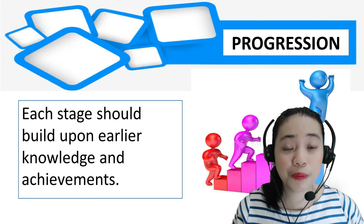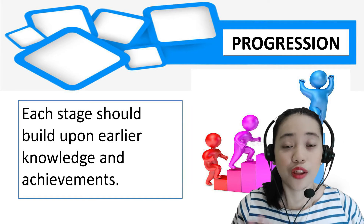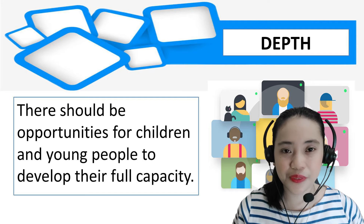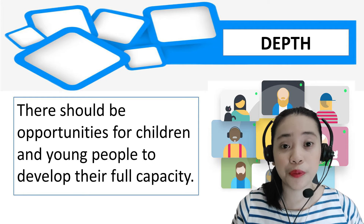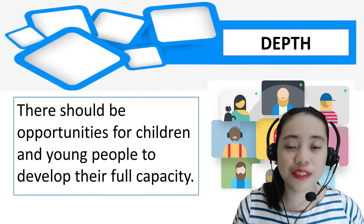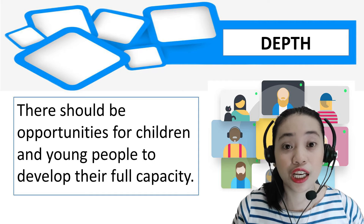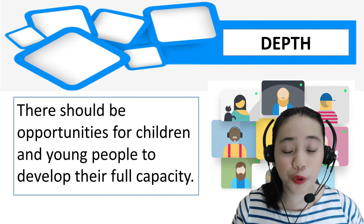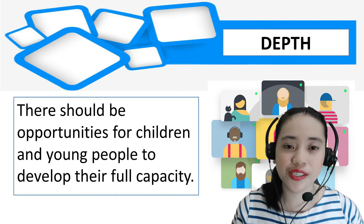Children and young people should be able to progress at a rate which meets their individual needs and aptitudes. The fourth principle, depth, means there should be opportunities for children and young people to develop their full capacity for different types of thinking, learning, exploring, and achieving more advanced levels of understanding.